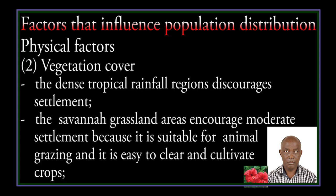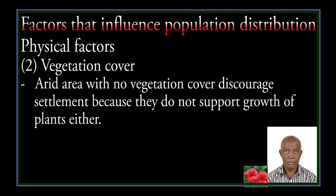Vegetation cover: the dense tropical rainforest region discourages settlement. The savannah grassland areas encourage moderate settlement because it is suitable for animal grazing and it is easy to clear and cultivate crops. High areas with no vegetation cover discourage settlement.